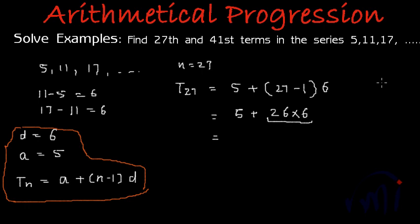26 multiplied by 6 is 156. This will equal 5 plus 156, which equals 161. So the 27th term will be 161. Let me write it over here, T_27 will be 161.